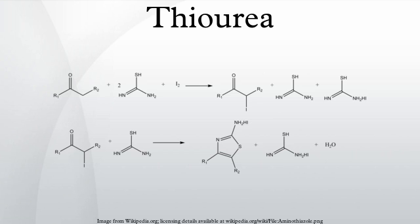Synthesis of substituted thioureas: many derivatives of thiourea are useful in organocatalysis. N,N-unsubstituted thioureas can generally be prepared by treating the corresponding cyanamide with LiSH in the presence of 1N HCl in anhydrous diethyl ether. The LiSH is prepared by treating lithium aluminium hydride with elemental sulfur. Alternatively, N,N-disubstituted thioureas can be prepared by coupling two amines with thiophosgene: R2NH + R2NH + CSCl2 + 2 pyridine → R2N-C=S + 2 pyridine·HCl. Amines can also condense with thiocyanates to give thioureas: R2NH + RNCS → R2N-C(S)-NHR.